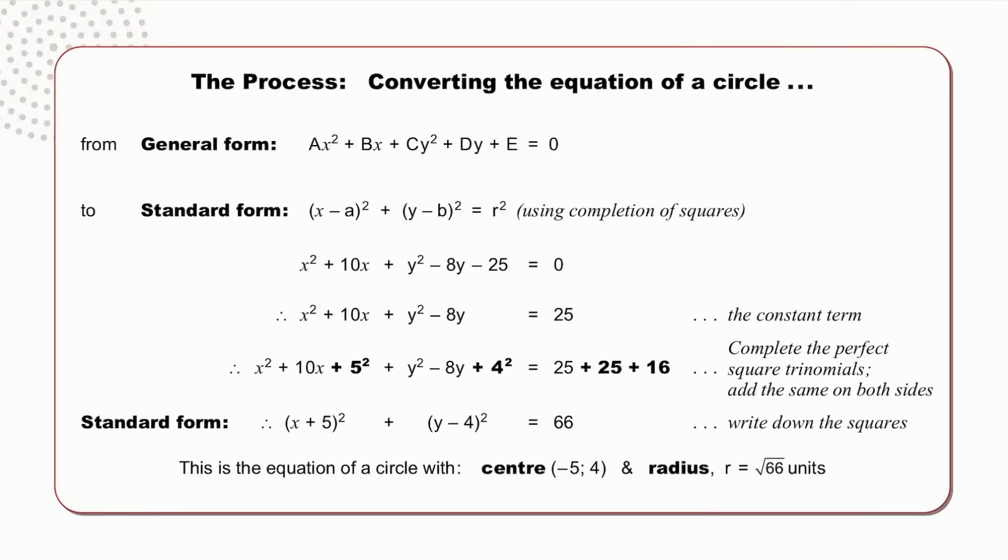Pause to study the process, converting the equation of a circle from the general form to the standard form using completion of squares. Our first step is to remove the constant term on the left and put it on the right. We then need to achieve our squares (x + 5)² and (y - 4)². So we take x² + 10x, half of 10 is 5, squared. y² - 8y, half of 8 is 4, squared. So we're adding 25 and 16 on this side, and therefore to balance the equation, we need to add 25 and 16 on that side too.